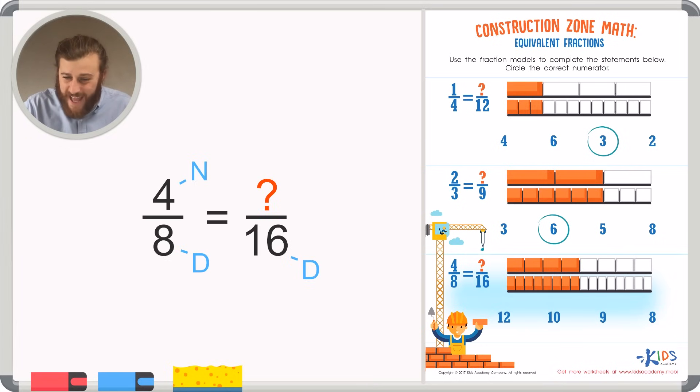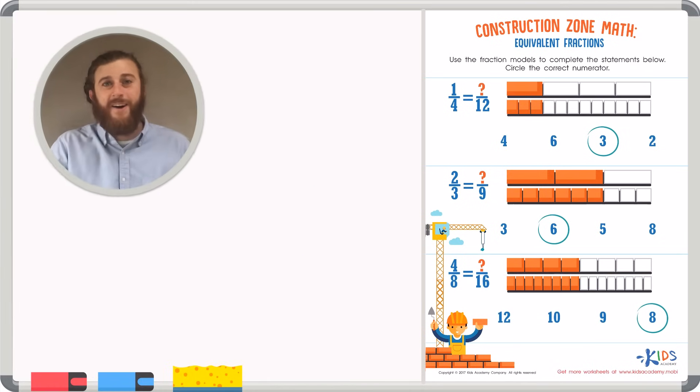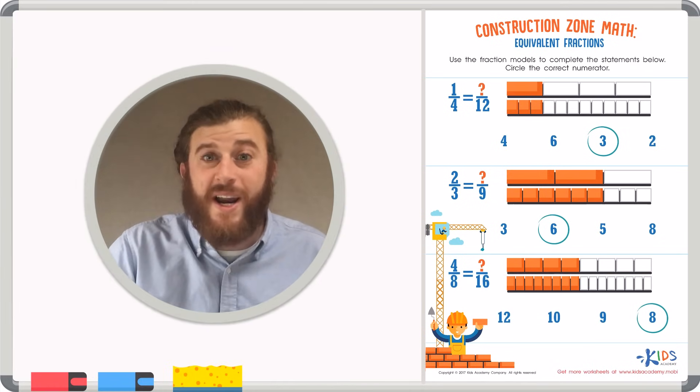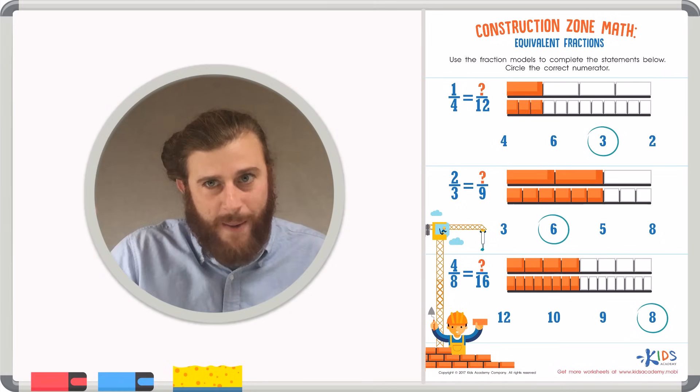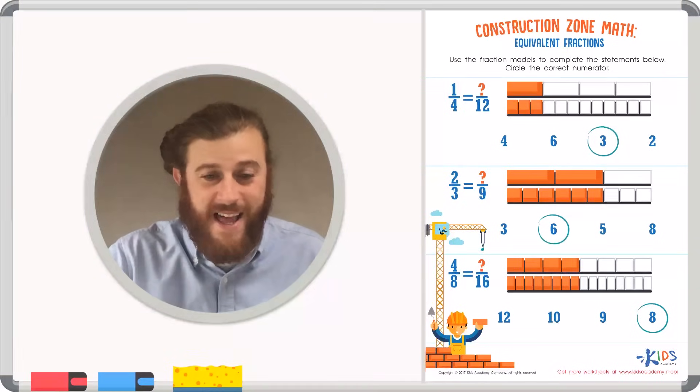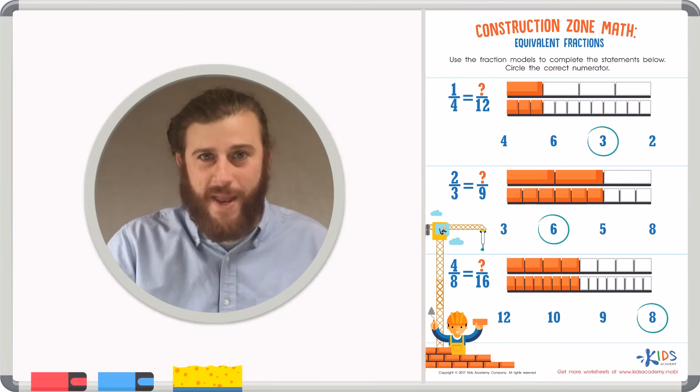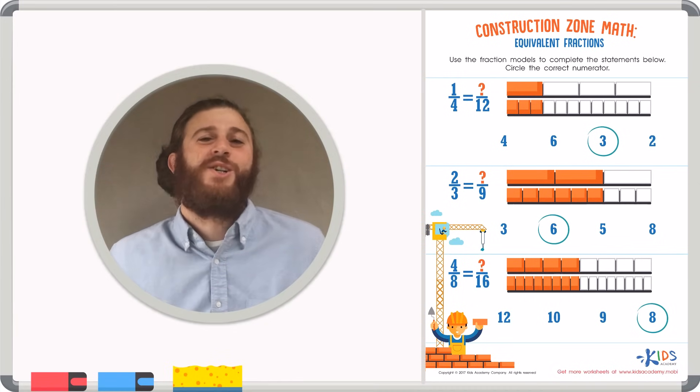And if we look, eight sixteenths takes up the exact same amount of space as four-eighths. And that means that eight sixteenths is the equivalent fraction, meaning that eight is the correct numerator or top number. Remember, boys and girls, the numerator is the top number, and that shows you how many pieces are shaded in in a fraction. And the bottom number is the denominator. That tells you how many pieces are in total.